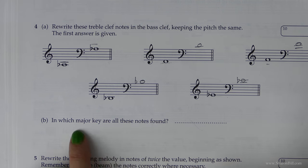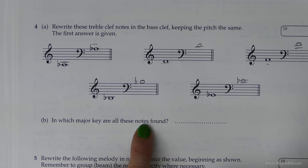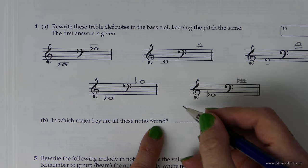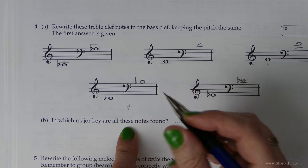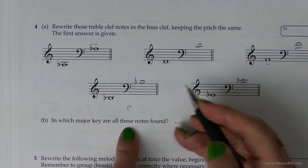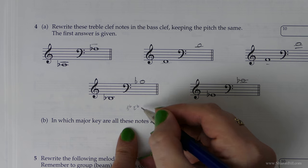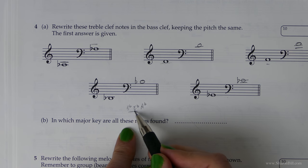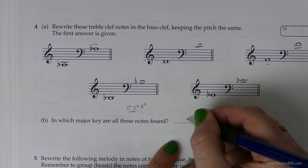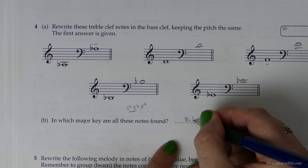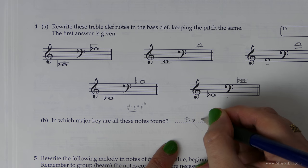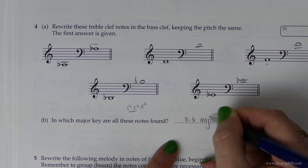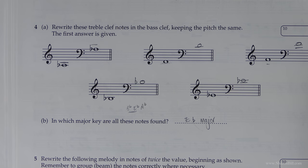In which major key are all of these notes found? So the clues that we've got are we've got a B-flat, an E-flat, and an A-flat. And all of those are part of E-flat major. E-flat major has got a key signature of B-flats, E-flats, and A-flats. So it's E-flat major. And that's that one answered now.